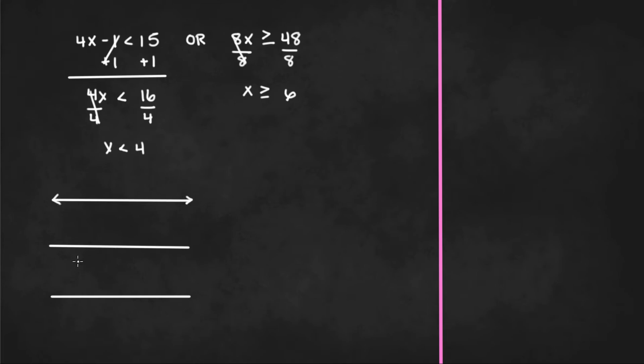So our first inequality is x is less than 4. So if 4 was right here, we would put an open dot at 4 since it's less than and not less than or equal to. So we're going to be moving to the left because that's where all the numbers become smaller. That would be a graph for the first inequality.